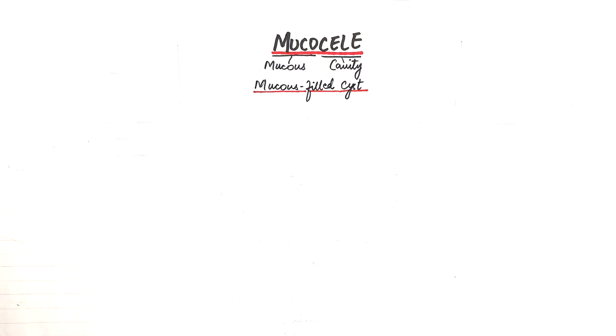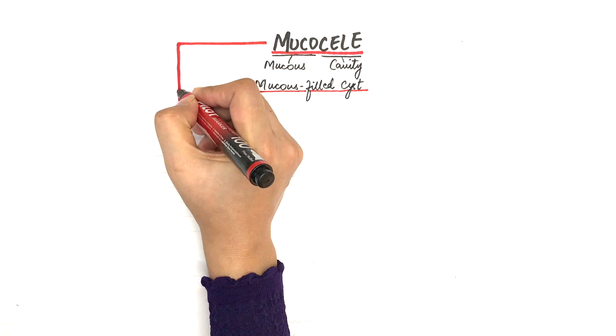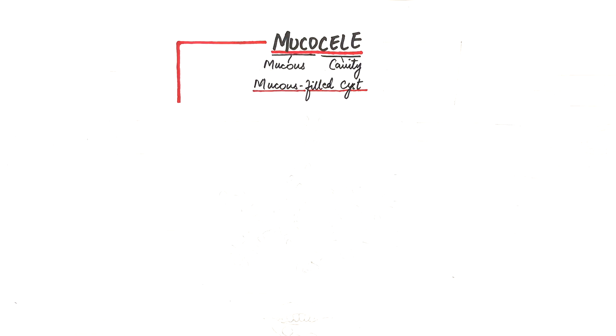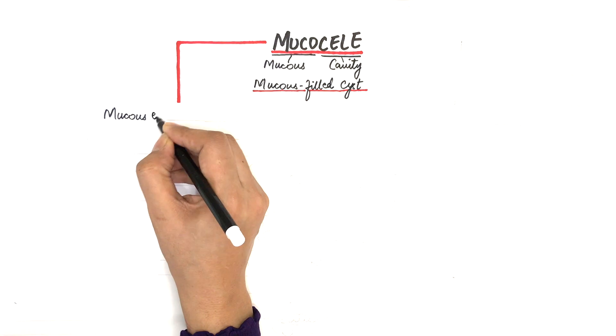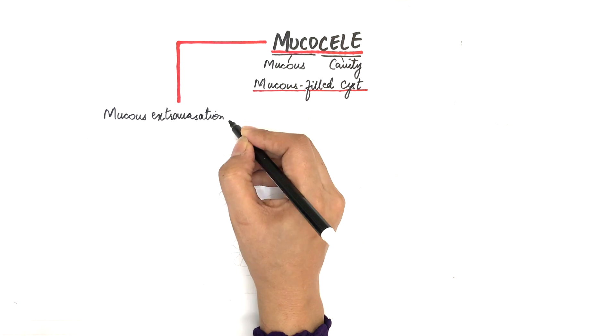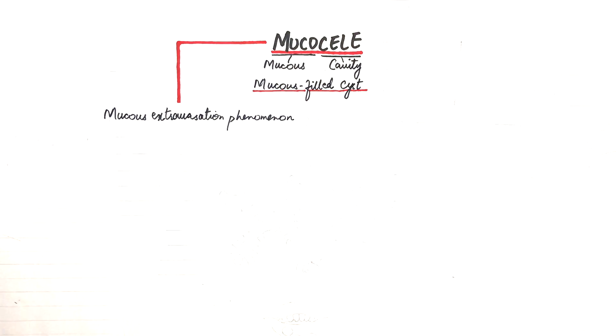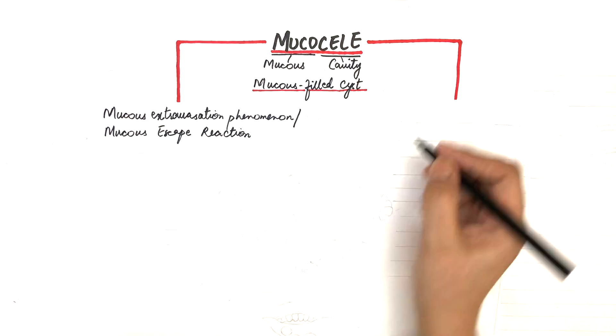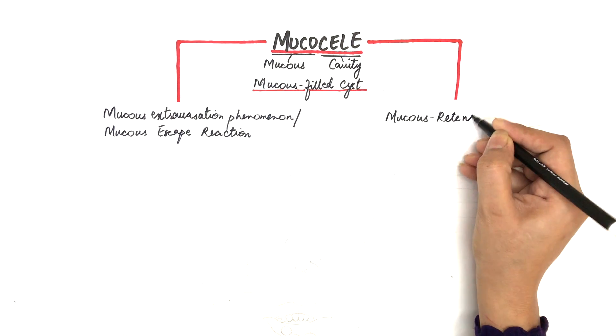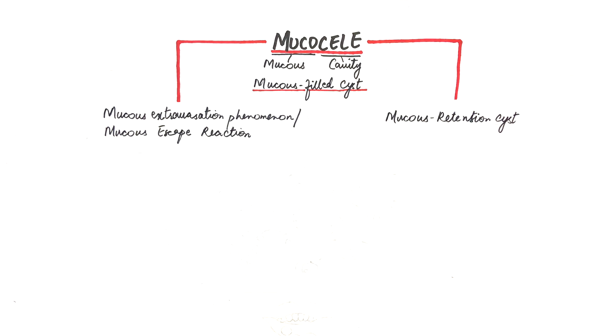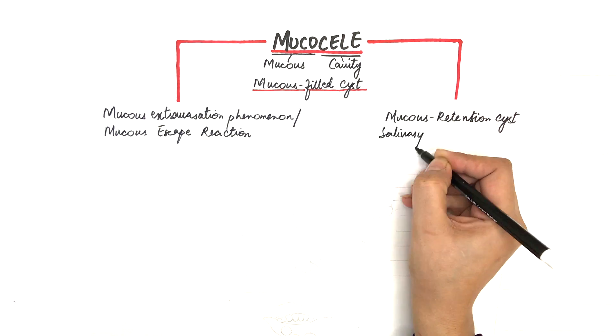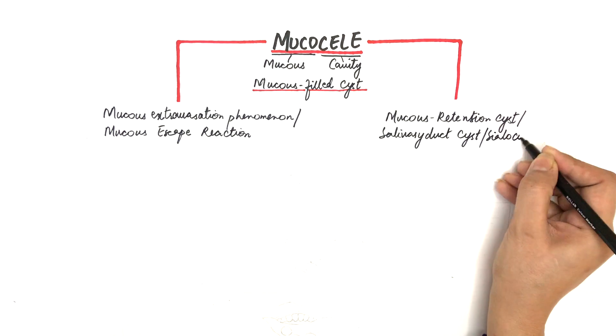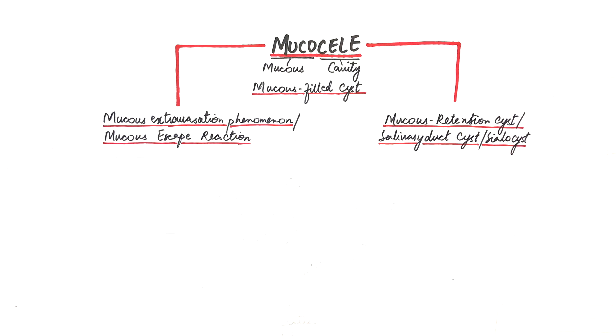It's the 17th most common salivary gland lesion of the oral cavity. Mucoceles are of two types, which are the mucus extravasation phenomenon, also called mucus escape reaction, and mucus retention cyst, also called salivary duct cyst or sialocyst. Now this seems to be confusing. Let's draw a diagram and differentiate between the two.